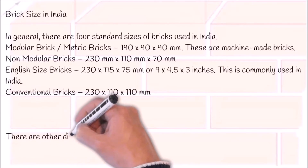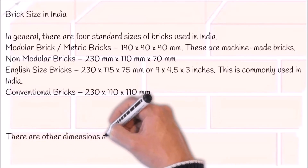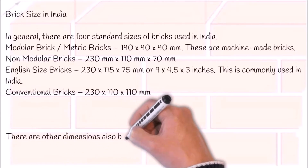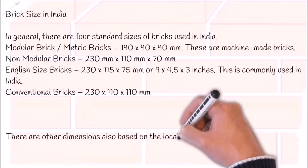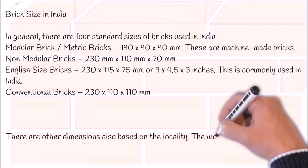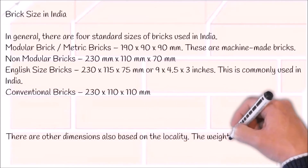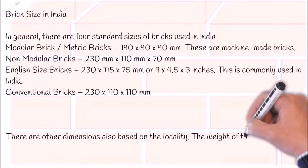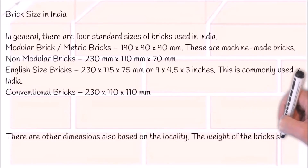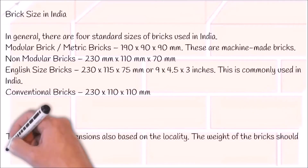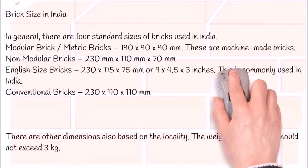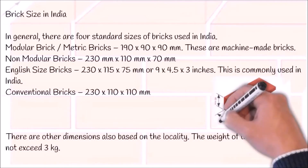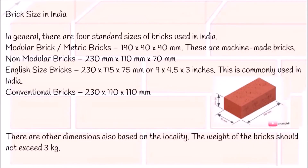Fourth is conventional bricks of size 230 x 110 x 110 mm. There are other dimensions also based on the locality. The weight of the bricks should not exceed 3 kg.